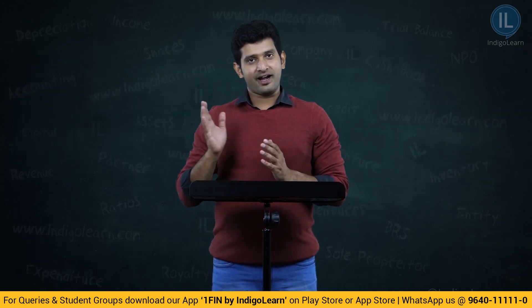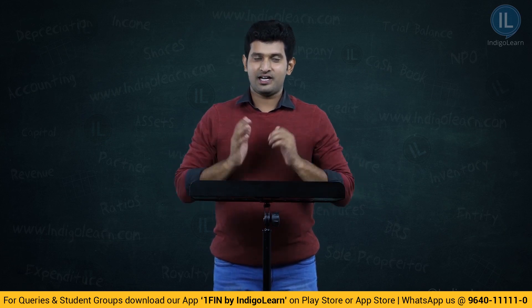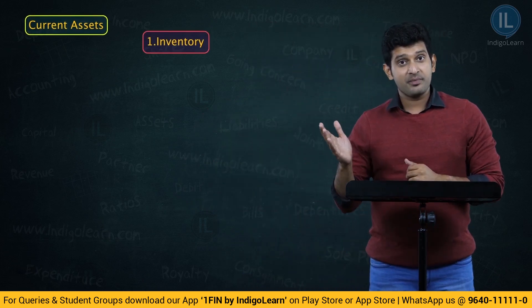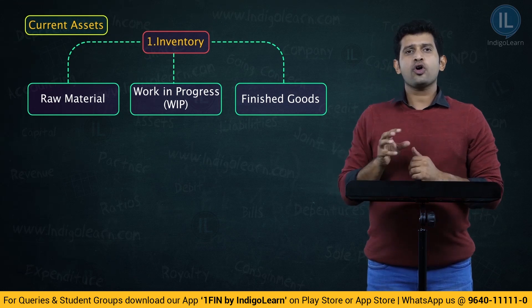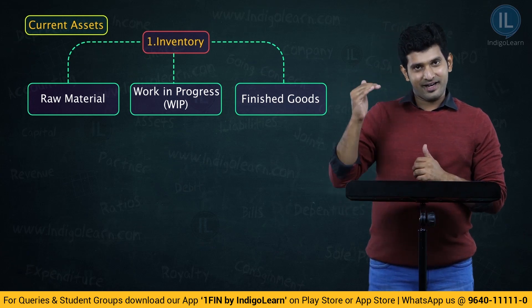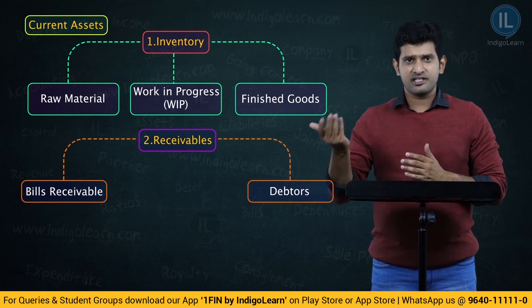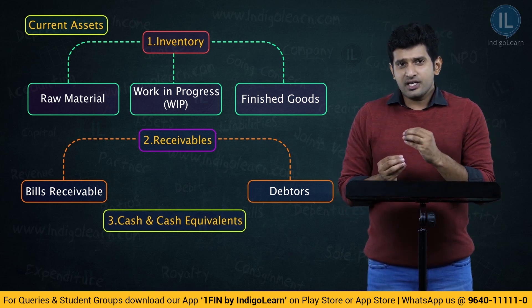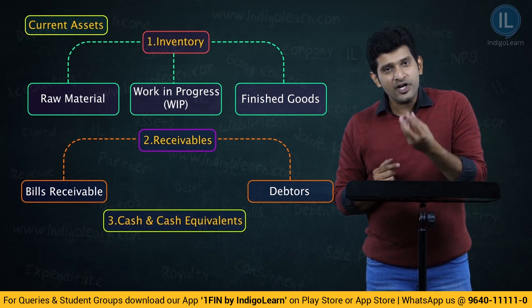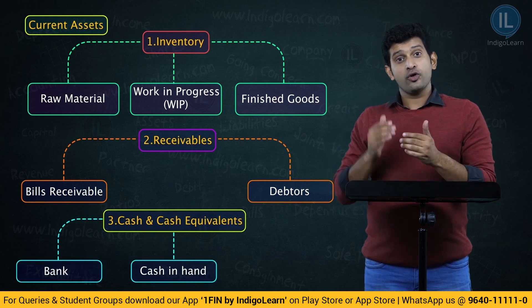Now that we have seen the definitions, let us see what items are categorized as current assets and current liabilities. Firstly, talking about current assets: the first item is inventory, which can be in the form of raw material, work in progress, as well as finished goods. All three will be categorized as inventory under current assets. Then receivables — that is bills receivables or debtors, trade receivables.